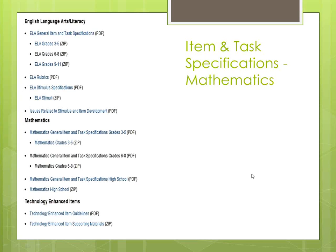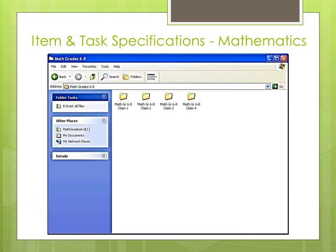If you click on a grade level, you will be able to access a folder of item specifications and item types. If you are doing this live with us, go ahead and open the grades three through five file. We are going to look at a few claims and assessment targets and the way that they are set up in these folders. Once you have opened the zip folder, you will see additional folders organized by claim. We talked in the webinars about claims one, two, three, and four in mathematics. Here there is one folder for each claim.